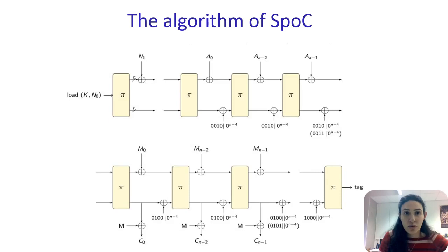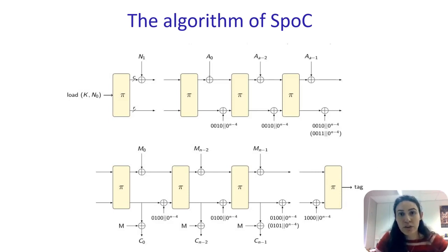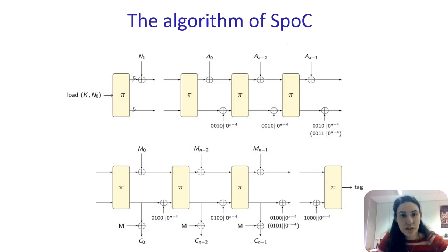The associated data and message processing phases are very similar. After each block is absorbed to the state, a control signal is added to the rate part. The value of this constant depends on the phase and the length of the block. The ciphertext is then obtained from the message processing phase by XORing the message and the rate bits.